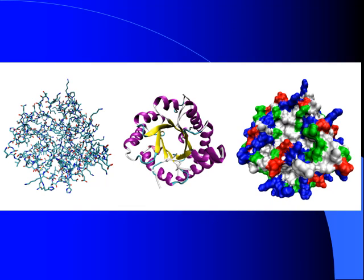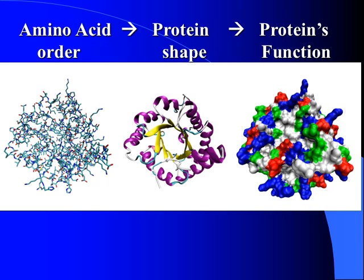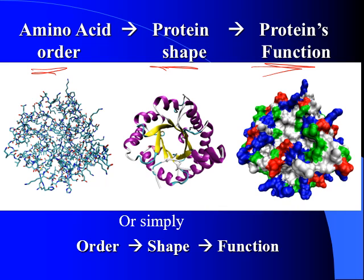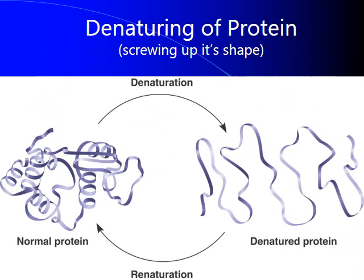Here are three different models of how complex proteins can look — it's the same protein shown at different layers of complexity. This shape came about as a result of the amino acid order, so order determines shape, and shape determines function. Keep in mind it is possible to mess up the shape of proteins — when you do that, the protein can't do its job. We call that denaturing the protein.